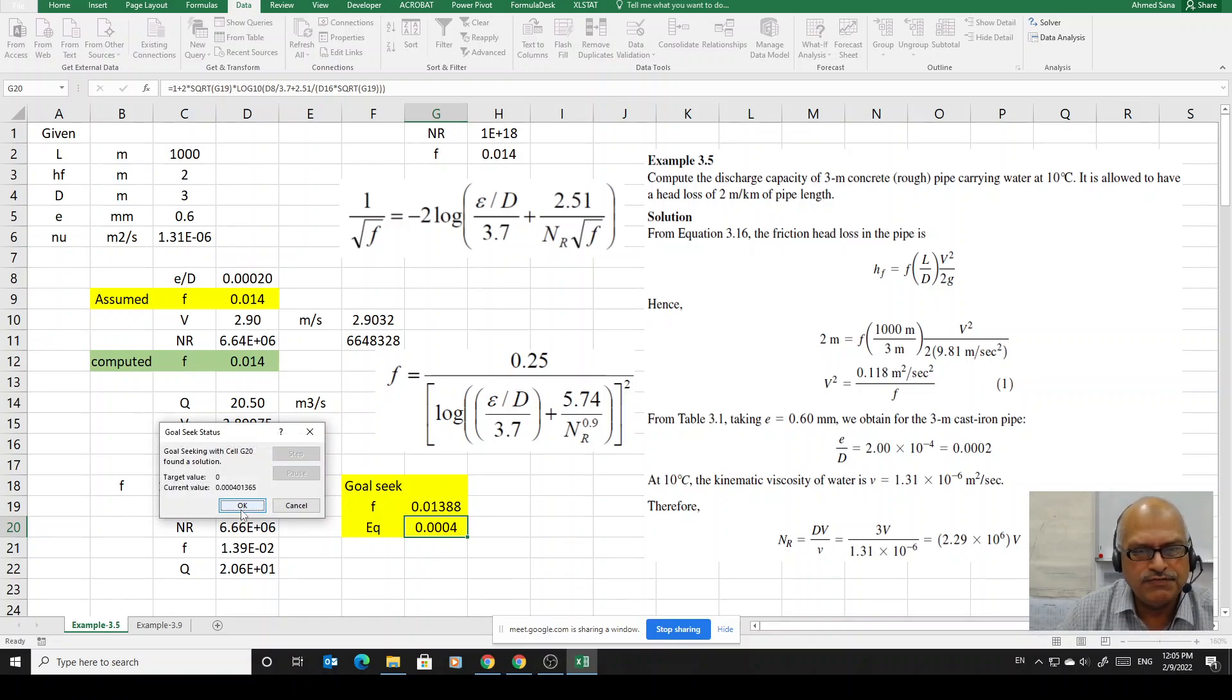As we say OK, it will start doing the iterations and you will see that the equation results in a value which is practically 0. 0.0004, which is practically 0. And we get the value of f as 0.01388. You can say 0.0139, something like that if you round it off.